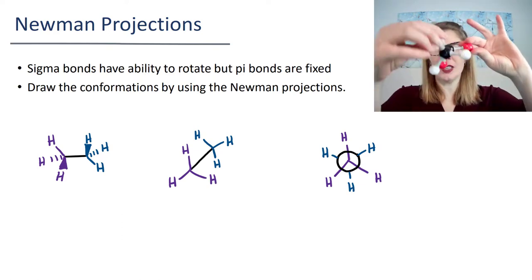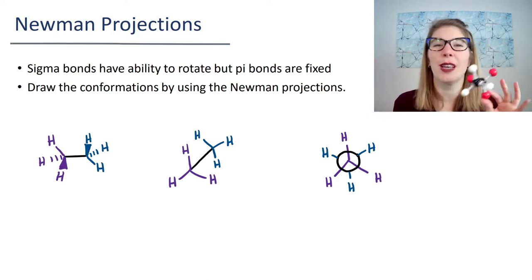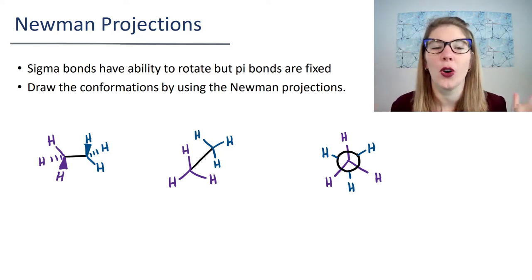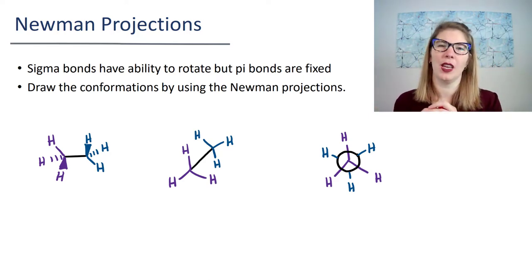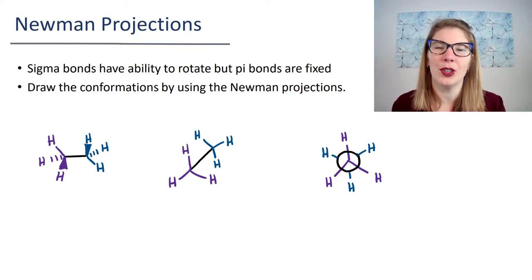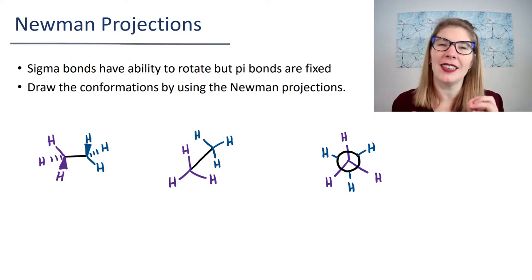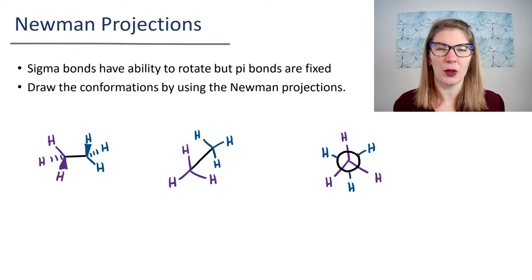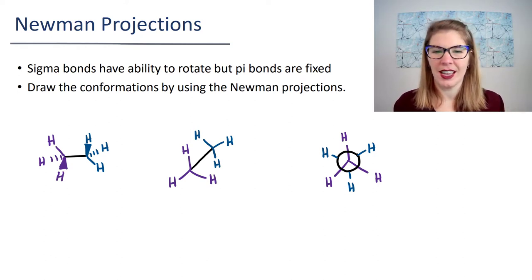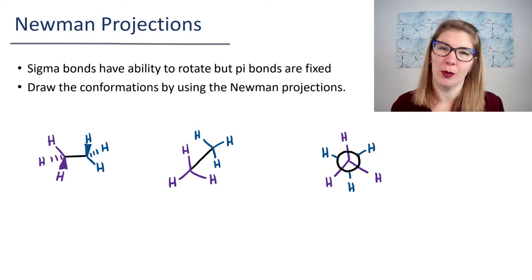So these bonds are rotating at room temperature all the time. What we want to be able to do is draw the different positions that these atoms can be sitting in with respect to one another at any moment. And the best way to do that is with Newman projections.